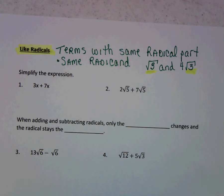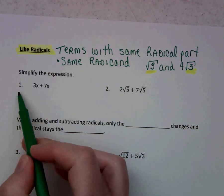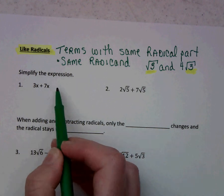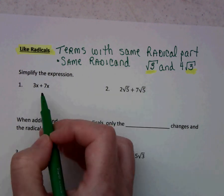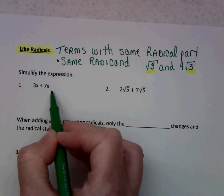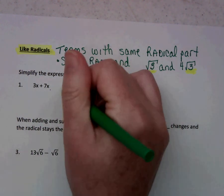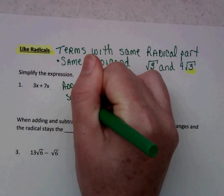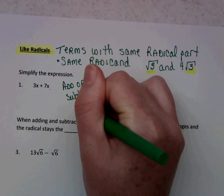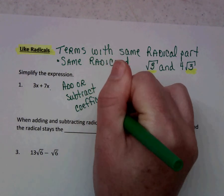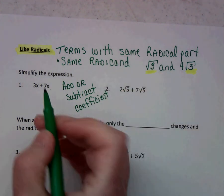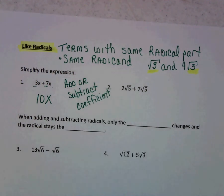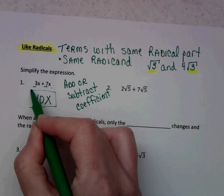Now let's look at some simple examples. In number one I have 3x plus 7x. These don't have any radicals, but I did this one to remind you that when we add or subtract like terms or like radicals, all we do is add or subtract the coefficient. The variable doesn't change, and we're going to see that the radical part doesn't change. So all we have to do is 3 plus 7, which is 10x.